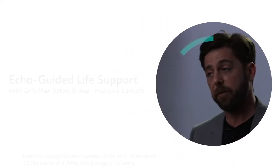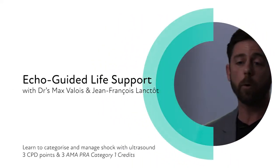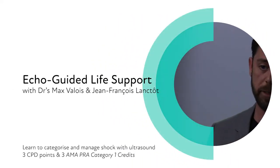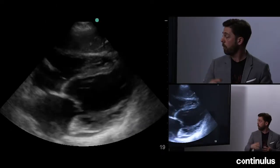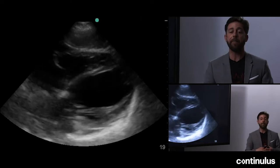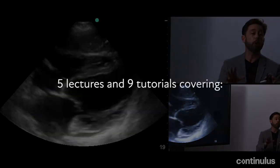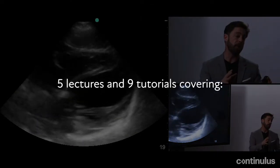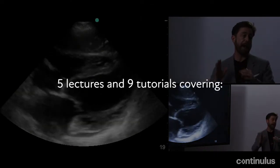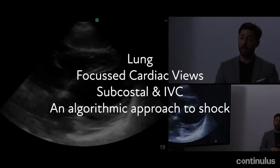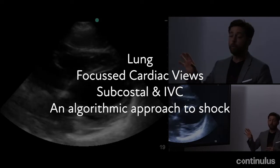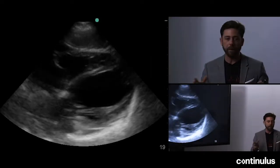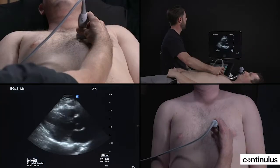If we were to measure the diameter of the cavity here, it would be more than five centimeters from inner wall to inner wall. That means that there's a chronic component to that LV dysfunction. So contrary to the RV, the LV won't dilate acutely.